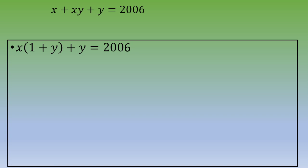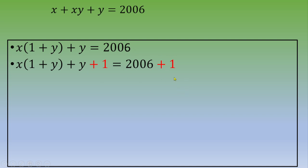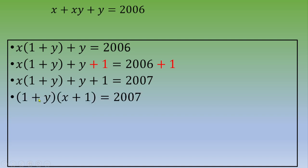The idea — which is always the same — is to add 1 to both sides. On the left side we have the same factor (1 plus y) appearing twice, and on the right side we add 1. So we get x times (1 plus y) plus (y plus 1) equals 2007. Then we factor out (1 plus y) and end up with (1 plus y) times (x plus 1) equals 2007.